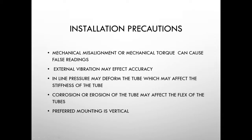Line pressure may deform the tube, which may affect the stiffness and change readings — analogous to bending a piece of tubing: it's easy to bend the first time, but bending it back cold-works the metal and makes it stiffer. Pressure has the same effect. Corrosion and erosion of the tube may also affect its flex — as tubes get older and thinner, they may twist more easily, causing measurement drift. Preferred mounting is vertical.